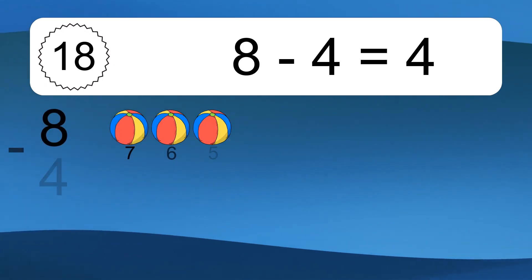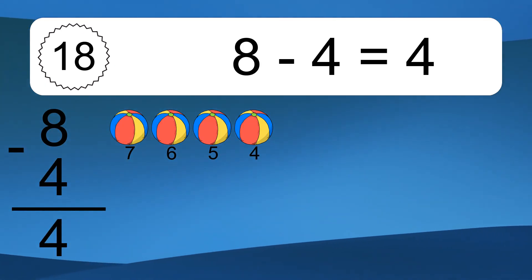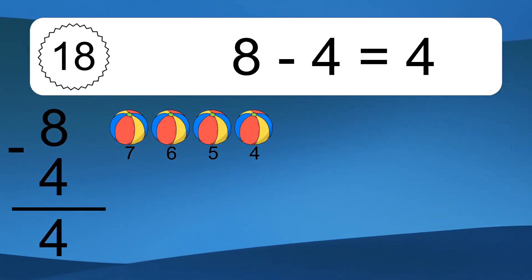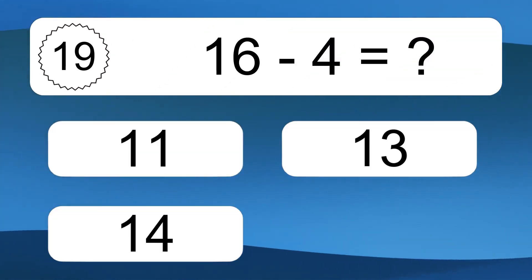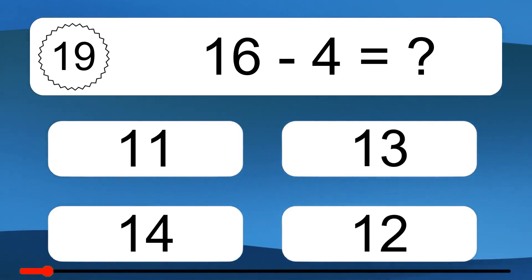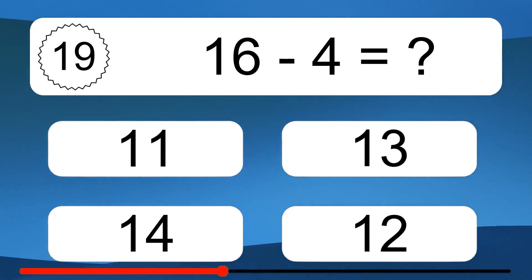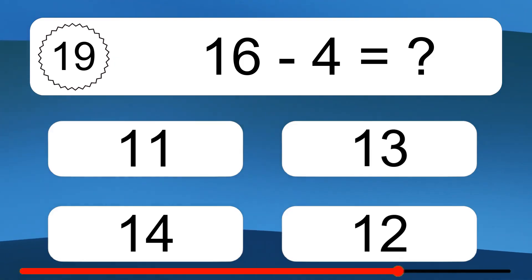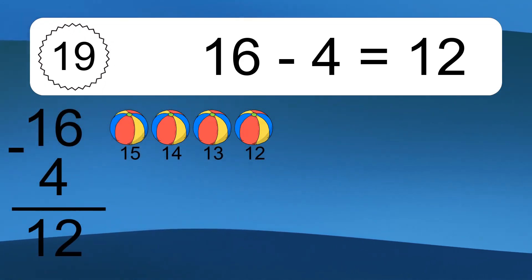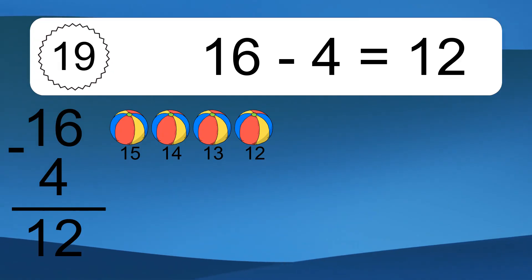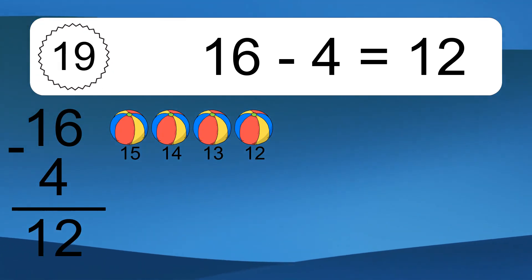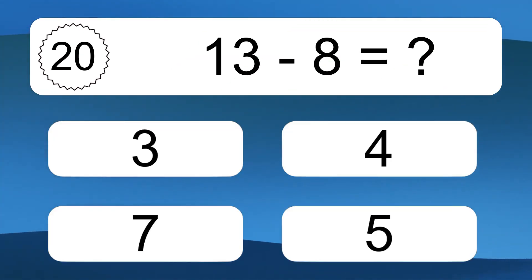8 minus 4 equals what? 8 minus 4 equals 4. Let's count it: 7, 6, 5, 4. 16 minus 4 equals what? 16 minus 4 equals 12. Let's count it: 15, 14, 13, 12.